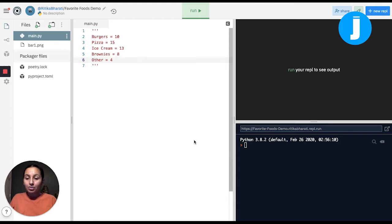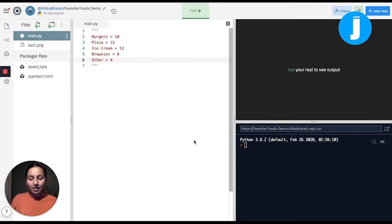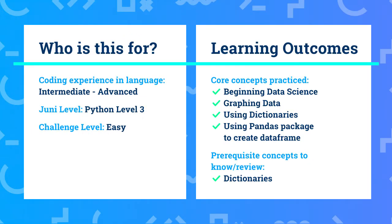So that's exactly what we're going to do today. We're going to learn how to use data science to visualize data, specifically looking at survey data. This project is really good for intermediate Python students and advanced Python students as well. If you haven't worked with Python as much, as long as you're well versed in coding in really any other language, this project is fine to do as well.